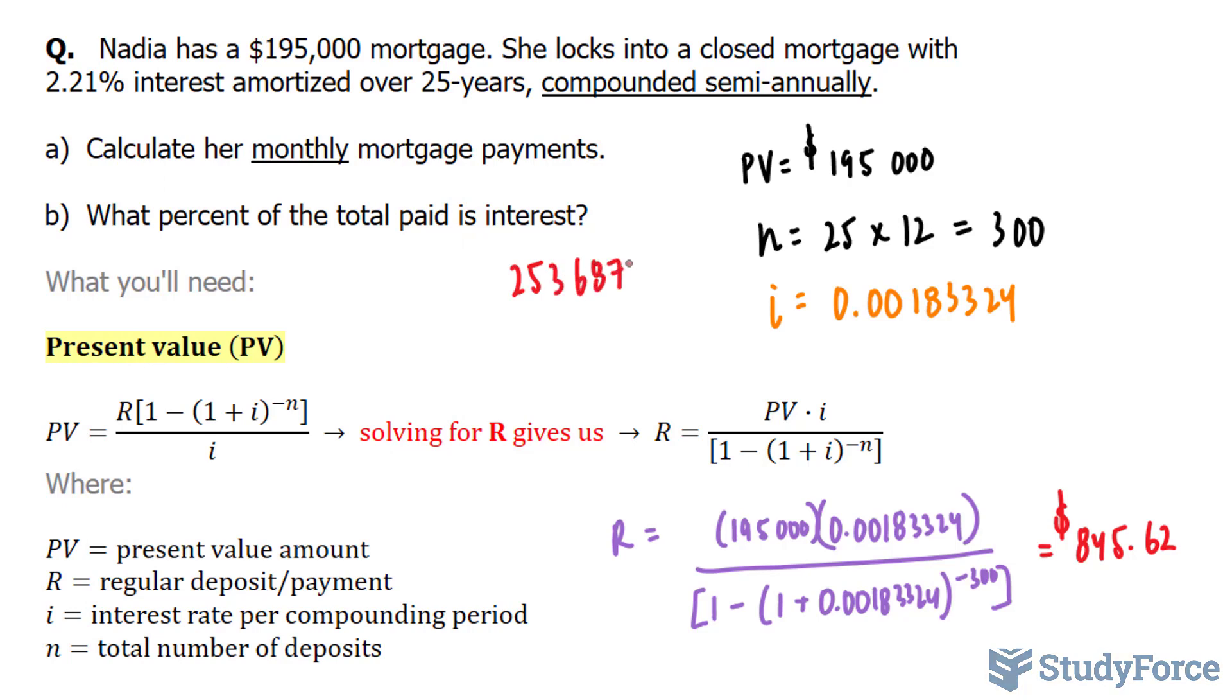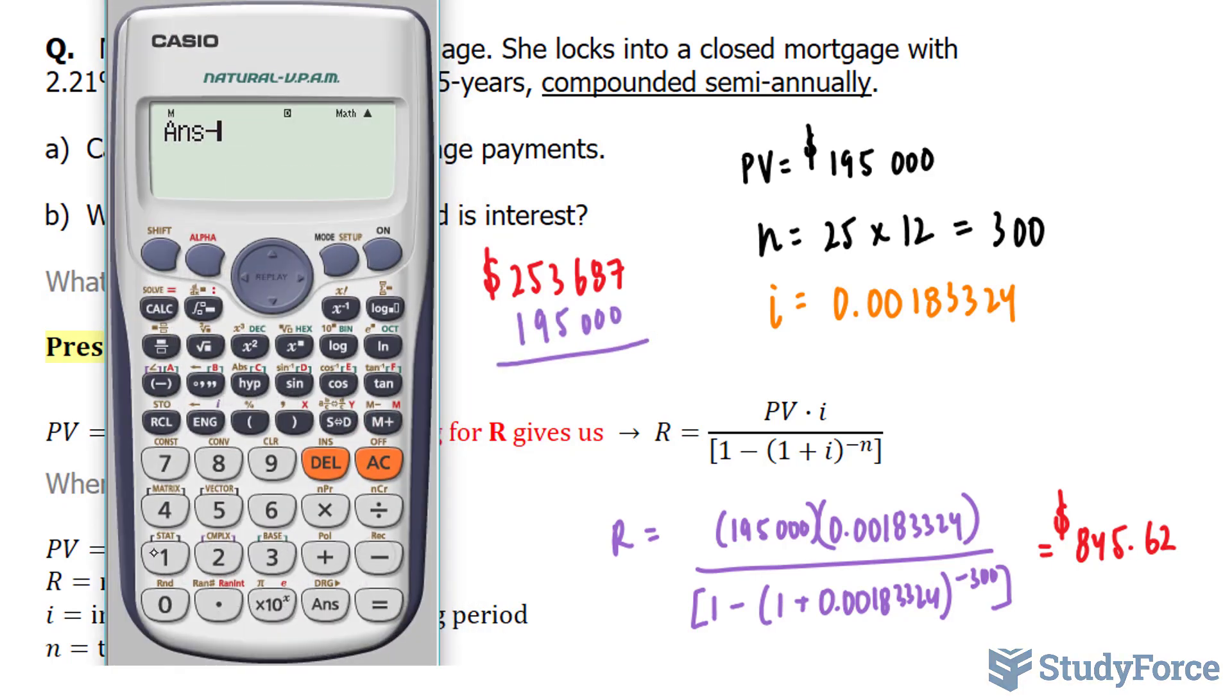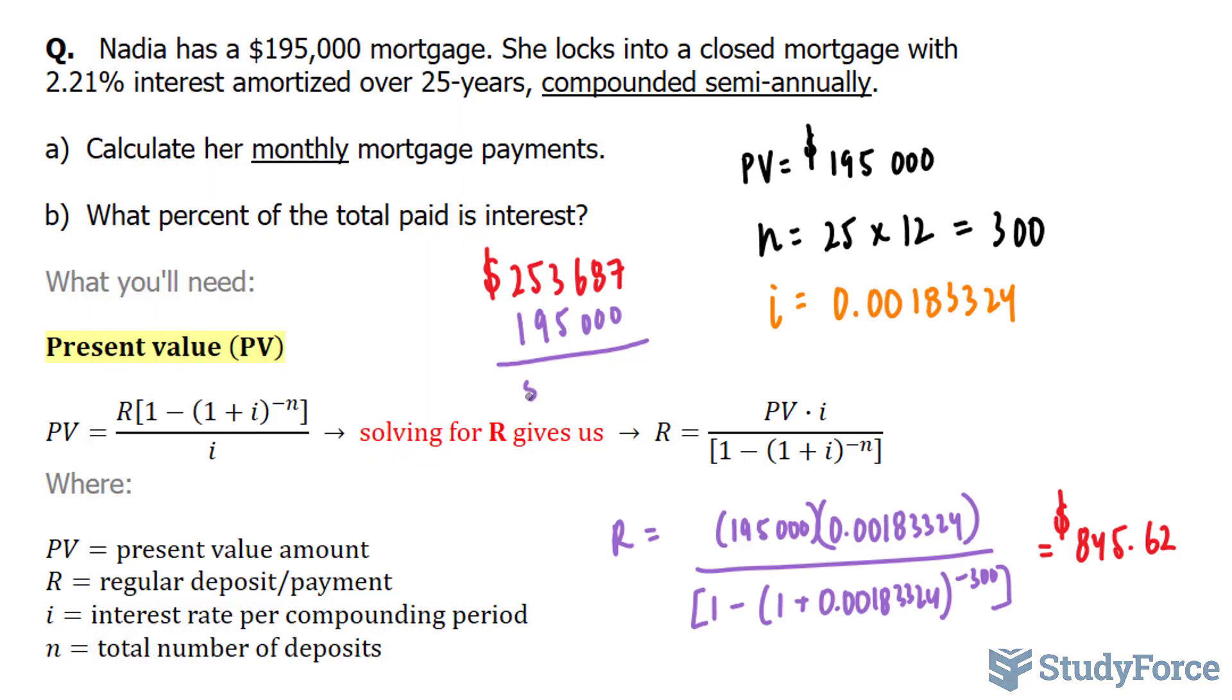253,687. And I'm going to subtract this from 195, and if I do that, minus 195, I end up with 58,687.